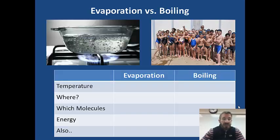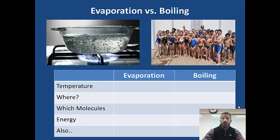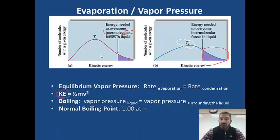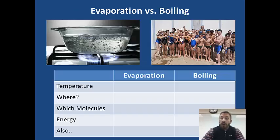What is the difference between evaporation and boiling? First, temperature: evaporation occurs below the boiling point, while boiling occurs at the boiling point. Where: evaporation only occurs on the surface, whereas boiling occurs throughout the entire liquid. Which molecules: during evaporation, only the molecules moving fast evaporate — only a few have the kinetic energy needed to escape. During boiling, almost all molecules are at high enough temperature that they have the kinetic energy to evaporate.